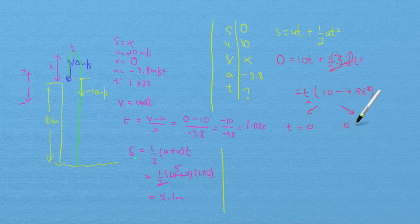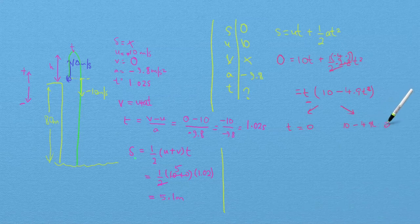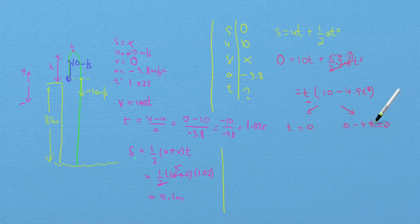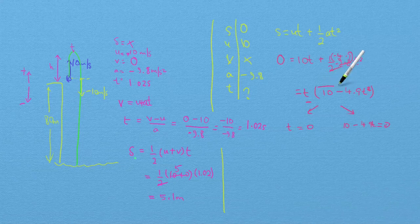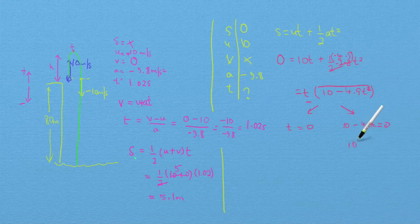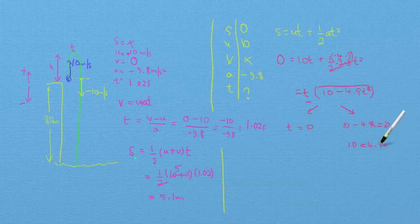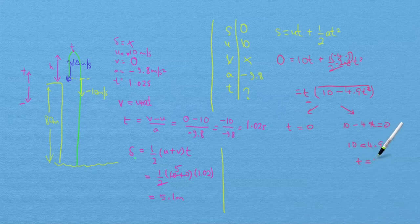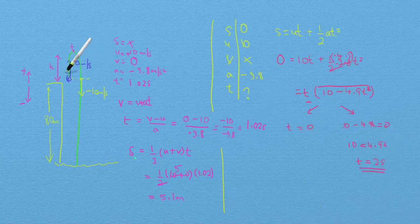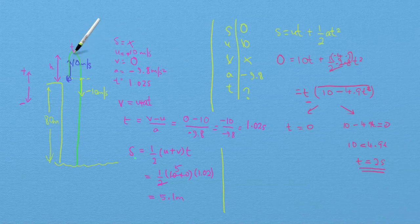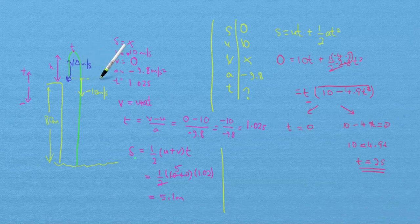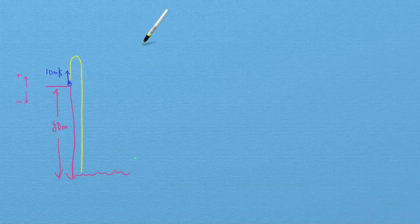So that's going to be when 10 minus 4.9t is zero. That's when this other factor here is zero. So just rearrange that 4.9t equals 10. And if I divide both sides by 4.9, you get approximately two seconds. So that's how long it takes for the ball to go up and come back down to the point where I first threw it.